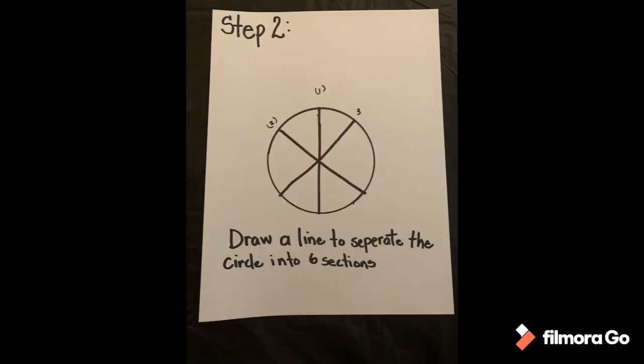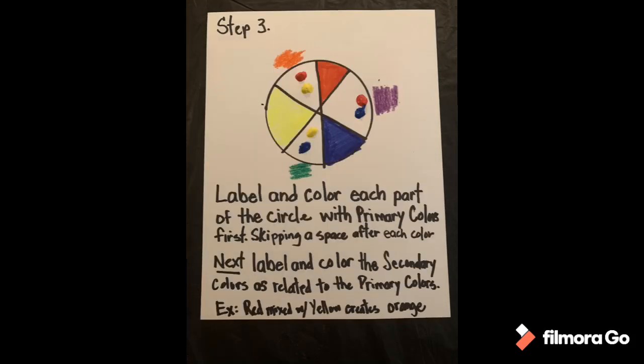Artists, let's begin. Step one: choose one of the objects to make a complete circle. Step two: draw lines to create a six-part circle as shown. Step three: label and color each part of the circle with primary colors first, skipping a space after each color — label your red, blue, yellow. Next, label and color the secondary colors as related to the primary colors. For example, red mixed with yellow will create orange.